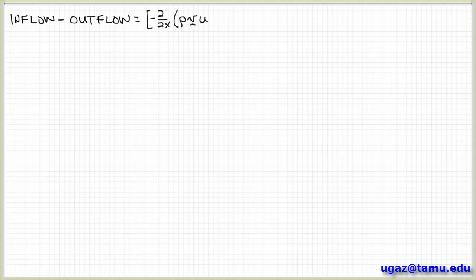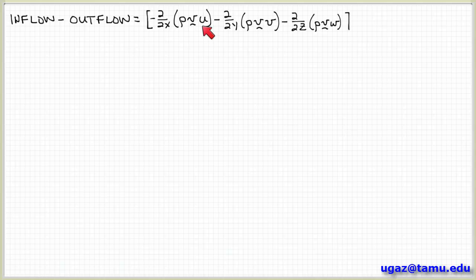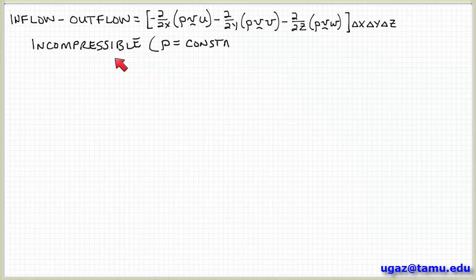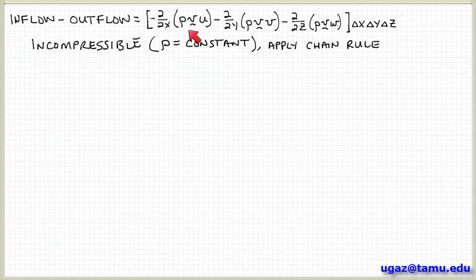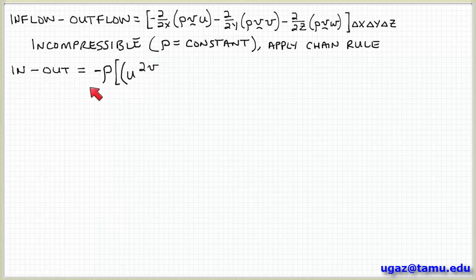Let me rewrite that as a starting point to continue. This v term is the vector v, multiplied by scalars representing the components of the velocity vector: u, v, and w. Now I'm going to make some assumptions — I'll assume incompressible flow so that rho is constant, allowing me to factor the density out of the derivatives. Then I apply the chain rule to take the derivative of the vector v and also of the components u, v, and w in each direction. The density factors out of the inflow minus outflow expression.